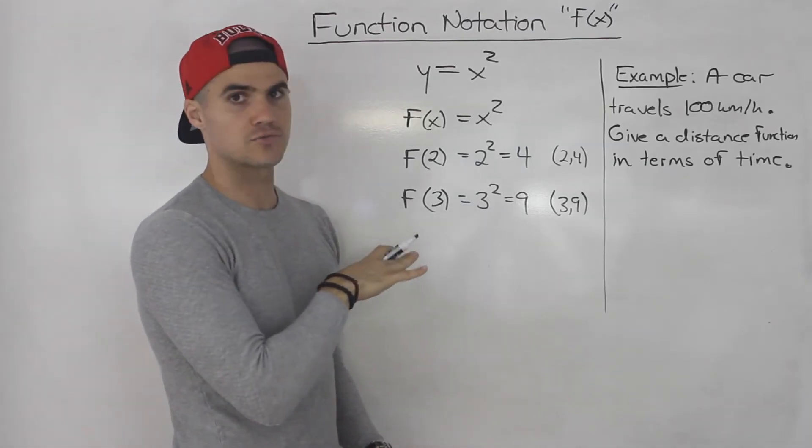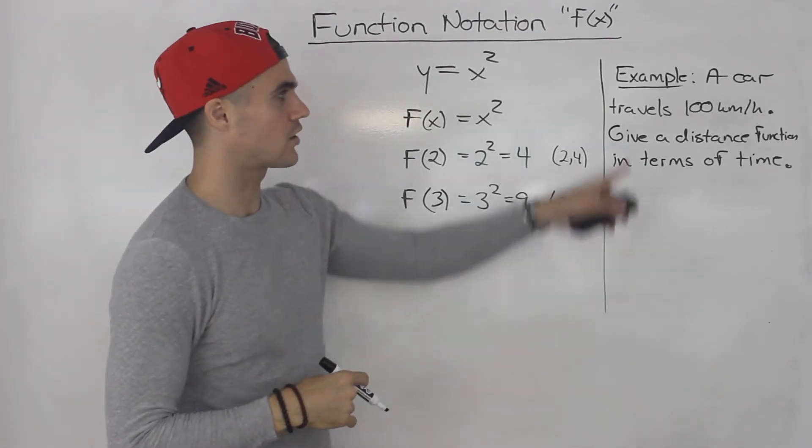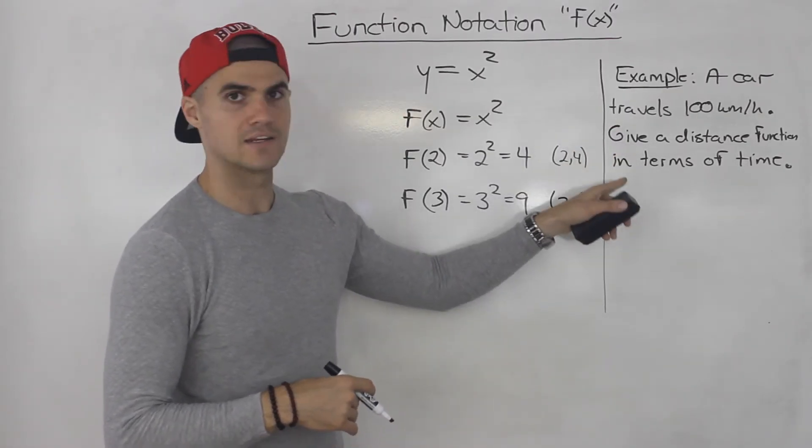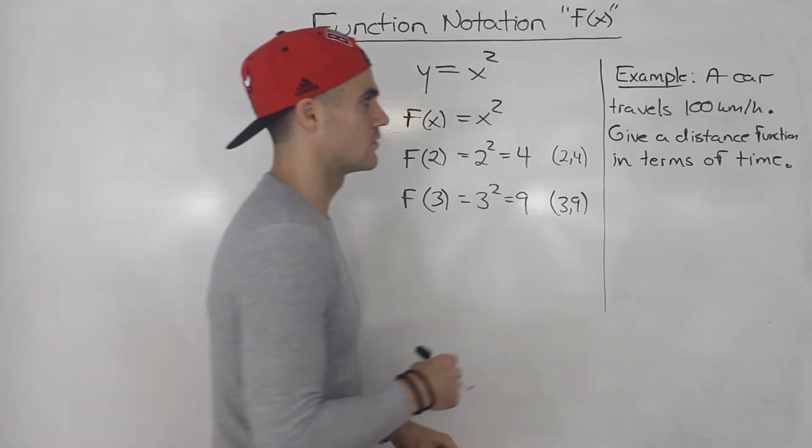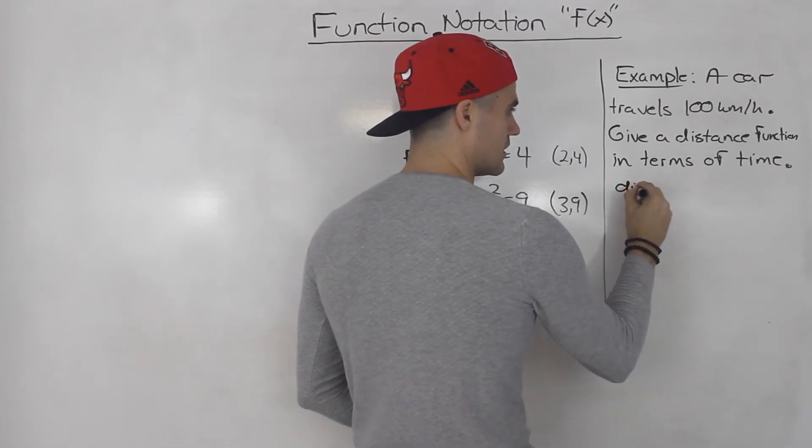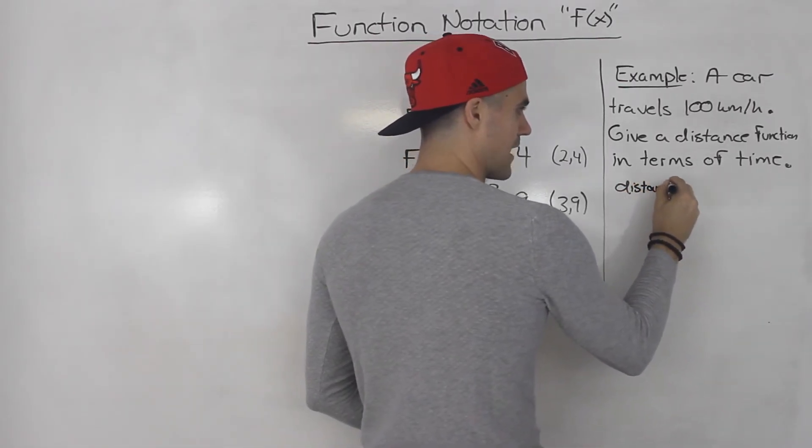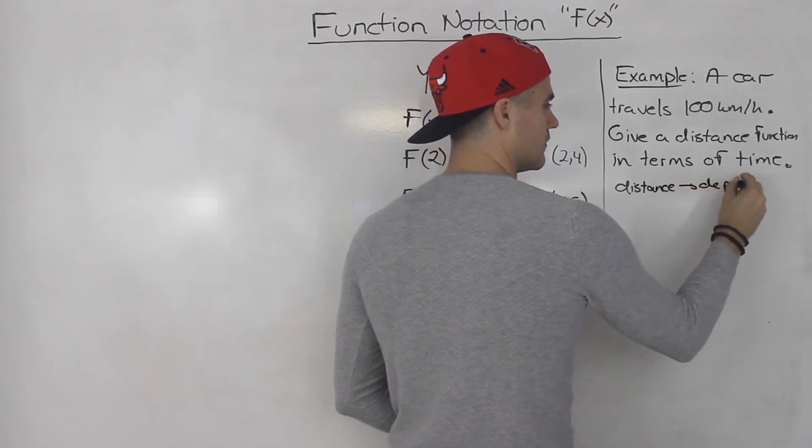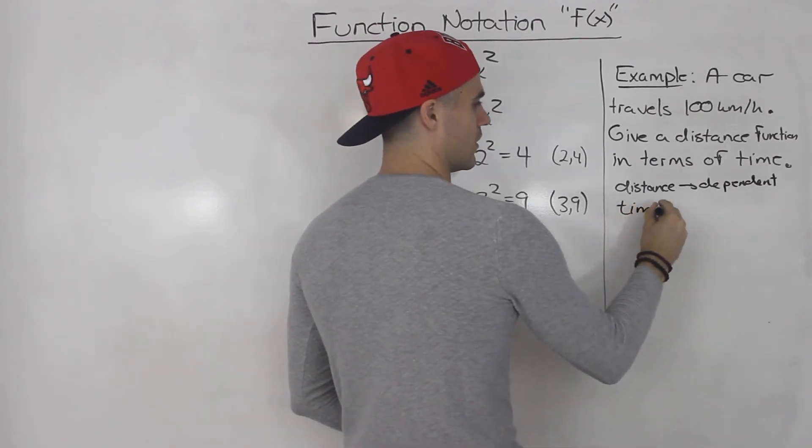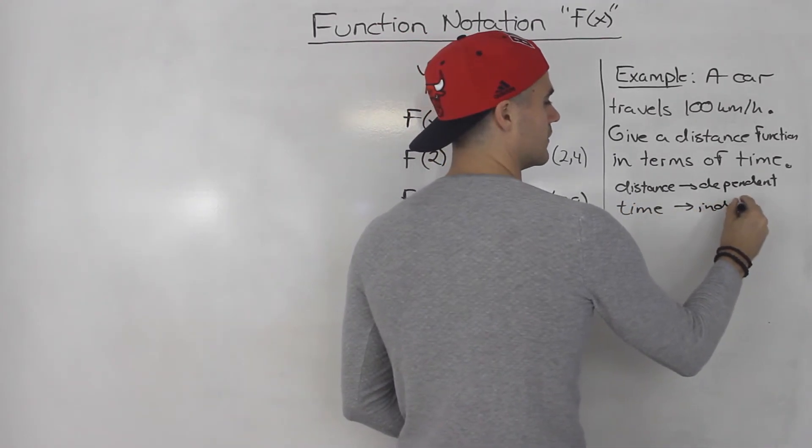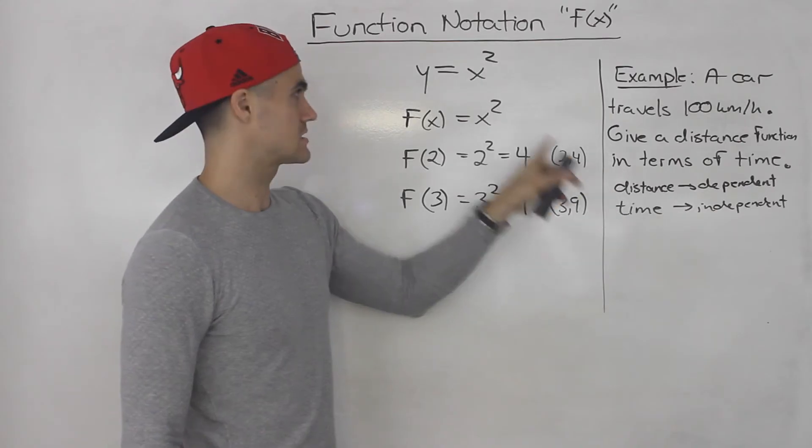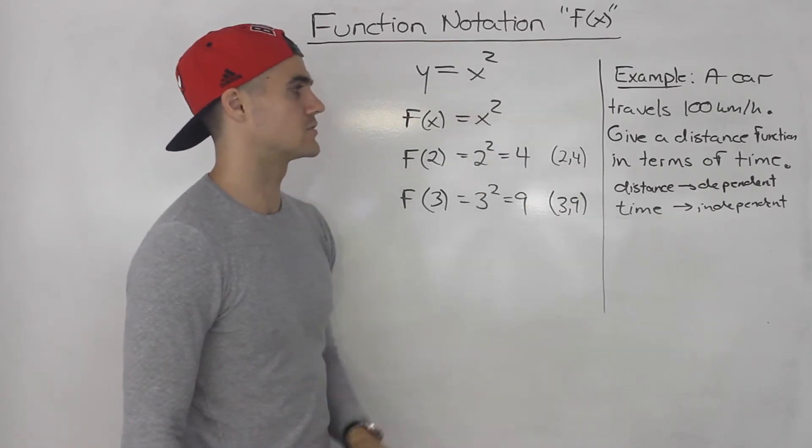Let's see how we could apply function notation to a simple word problem. Let's say a car travels at 100 kilometers per hour. We have to give a distance function in terms of time. So distance in terms of time. We know the distance is the dependent variable, and it's going to be in terms of time, which is the independent. It's like the y value is going to be distance, and then the x value, the independent variable, is going to be time.